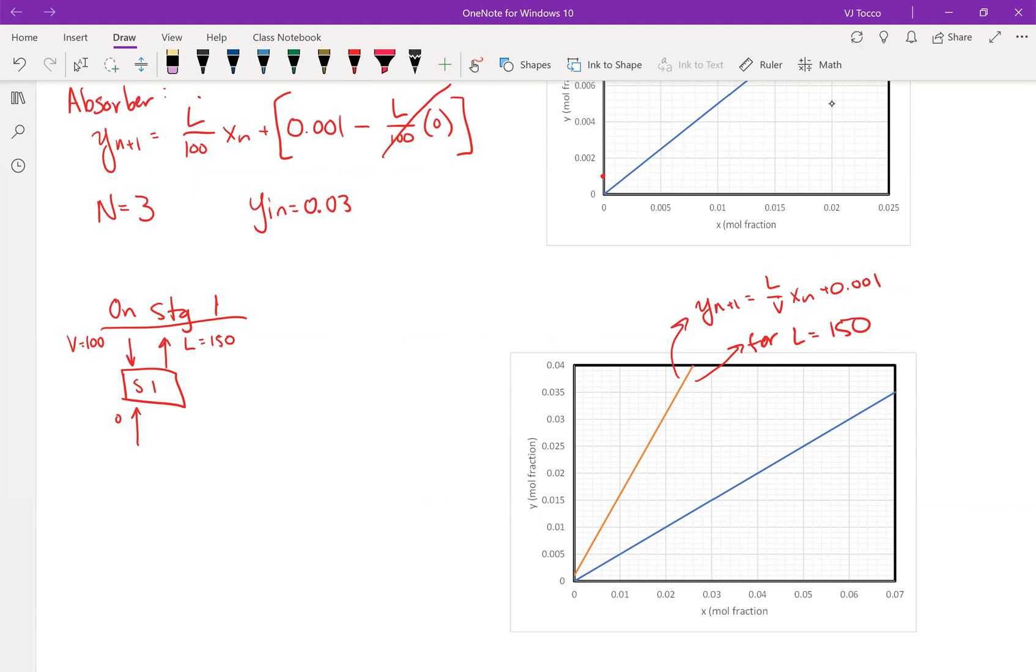But V was specified by the problem to be 100. Oh, I'm drawing this backwards. This is V. V is equal to 100. I just drew the L on the wrong side. So L is 150. X_in is equal to 0. L is equal to 150. Y_out is 0.001 as specified. And last time I said that x_n was going to be in equilibrium with y_out, right? X1 is in equilibrium with y_out. Where is y_out on my diagram? It's there. 0.001. How do I figure out what's in equilibrium with y_out is equal to 0.001? Well, I find the coordinate that is on the equilibrium curve.